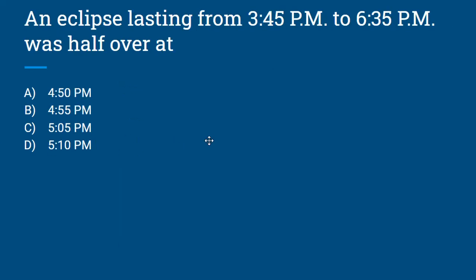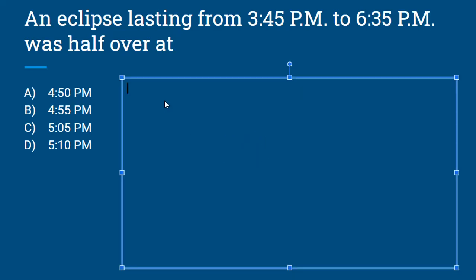Our next question is: an eclipse lasting from 3:45 PM to 6:35 PM was half over at A) 4:50 PM, B) 4:55 PM, C) 5:05 PM, D) 5:10 PM. What we have to do is find the average of 6:35 and 3:45, so we have to add up the times. Let's figure out how much time there is between them. There is 2 hours and 50 minutes, and we want to divide this by half.